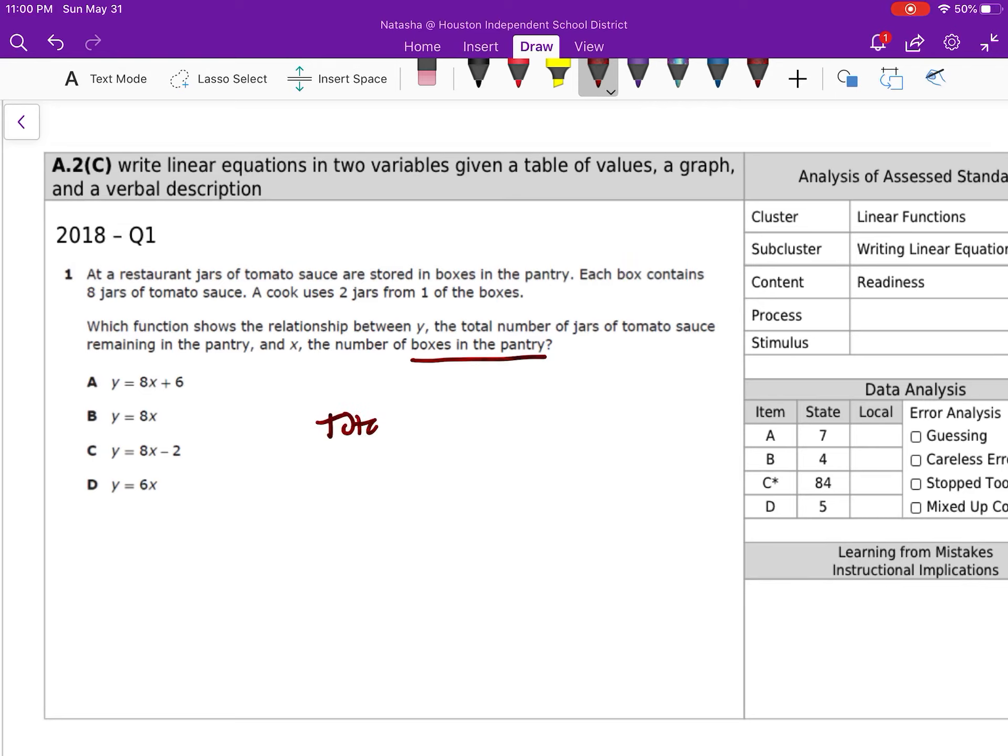So x is representing the number of boxes, and y is the total, so total number is equal to whatever boxes we have, but each box contains 8 jars. So that's going to be 8 times the number of boxes, so this is going to be y is equal to 8x. But we used 2 jars from one of the boxes, so that's going to be minus 2. That's going to give us our answer choice c.